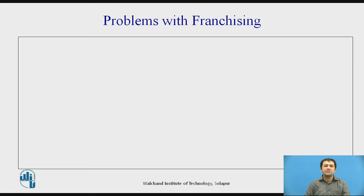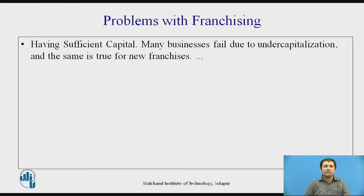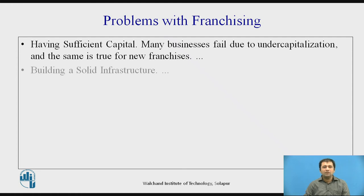What are the problems associated with franchising? The first and foremost problem is having sufficient capital. Many businesses fail due to undercapitalization and insufficient capital available with them. Suppose a new business wants to do franchising — it may fail purely due to undercapitalization. The second important problem is building a solid infrastructure. If a franchising business is not built on a solid infrastructure basis, it can truly fail.